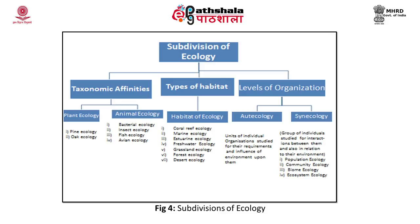Figure 4 shows the flowchart for the subdivisions of ecology, where ecology can be divided into three types based on: taxonomic affinities, types of habitats, and levels of organization. According to taxonomic affinities, it can be divided into plant ecology and animal ecology — plant ecology like pine ecology and oak ecology; animal ecology like bacterial ecology, insect ecology, fish ecology, and avian ecology. Depending on types of habitat, ecology can be divided into coral reef ecology, marine ecology, estuarine ecology, freshwater ecology, grassland ecology, and forest and desert ecology. Based on levels of organization, it can be divided into autoecology and synecology.